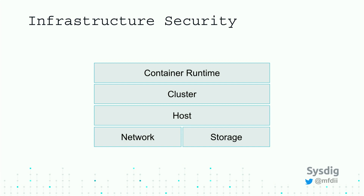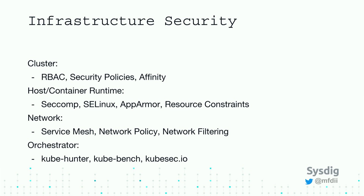You can think of infrastructure security in different layers. At the cluster layer, you have things like RBAC — role-based access control — security policies, and affinity. Kubernetes has this thing called affinity, so you can have workloads scheduled and say 'I never want this workload to be scheduled next to this workload.' If you have a workload processing sensitive data, you can isolate it onto its own hosts and not have things like your web front end running right alongside it.